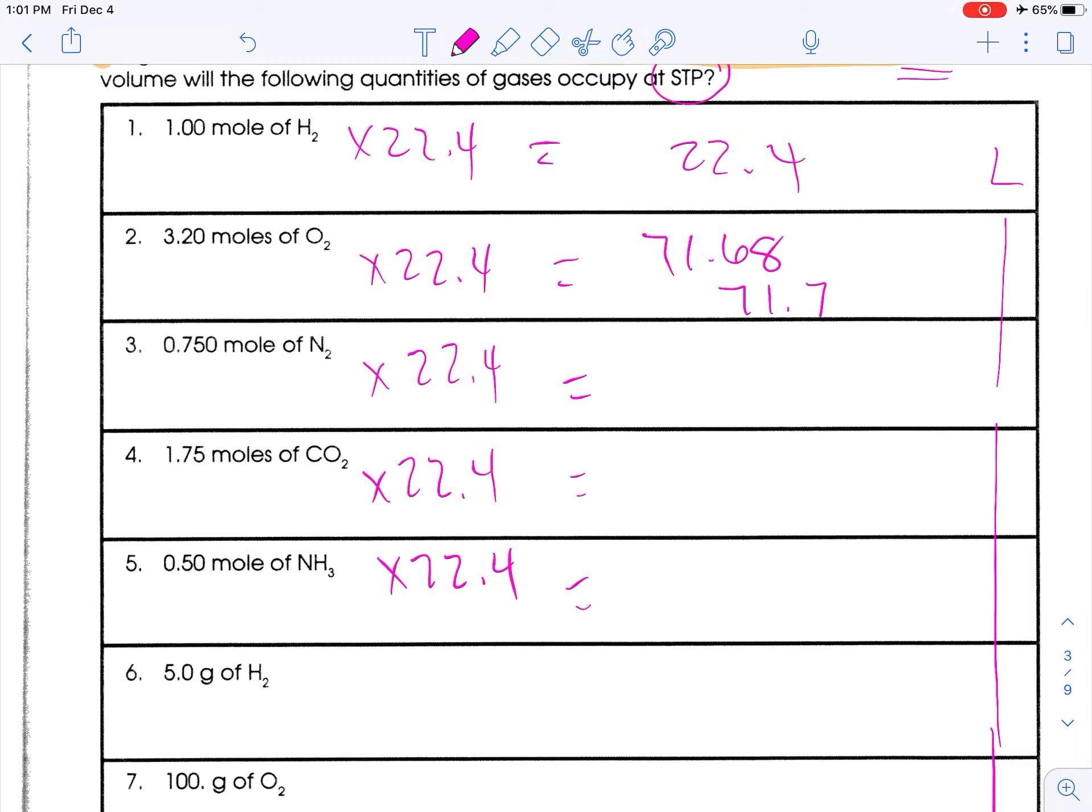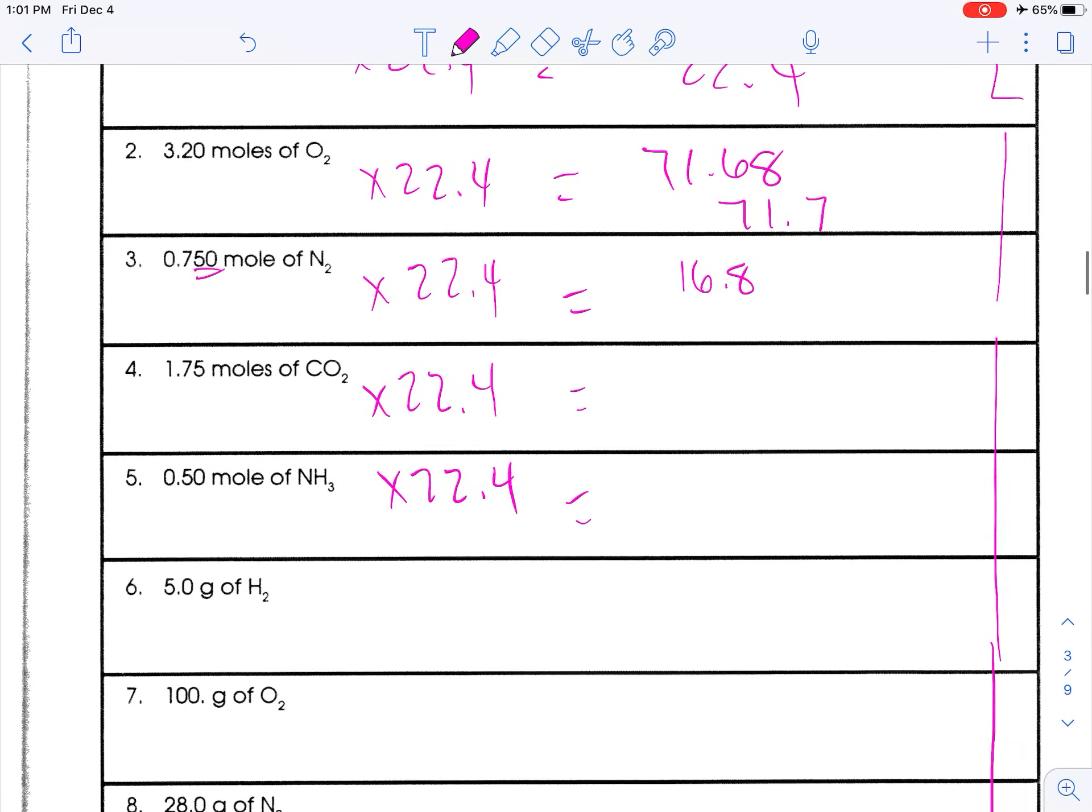.750 times 22.4 is 16.8 which is three sig figs. 1.75 times 22.4, 39.2. Sig figs are correct.